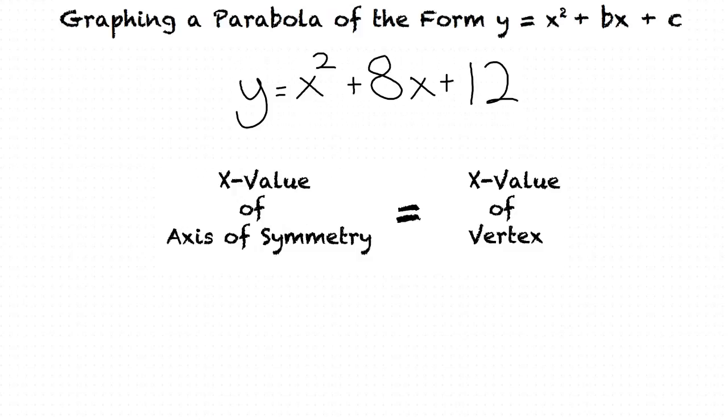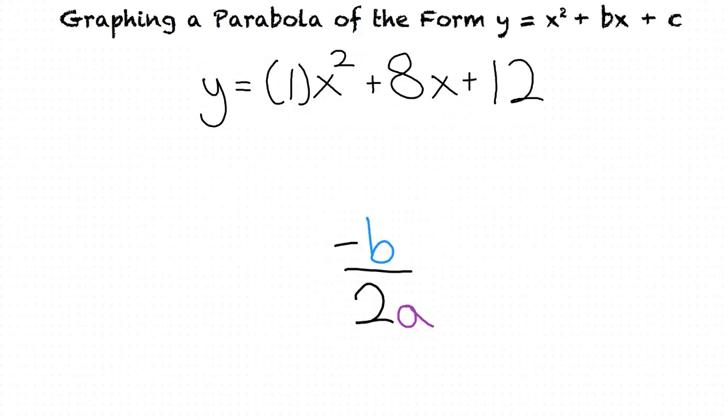This means that if we find the x value for the axis of symmetry, we can find the x value of our vertex. The axis of symmetry formula is represented as negative b divided by 2a, with b equaling our linear term and a equaling our quadratic term.